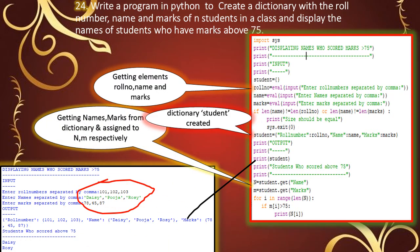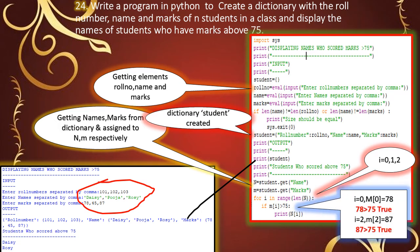Next, we compare the marks with 75 in a for loop using range(len(n)). Since n has three elements, the loop runs from 0 to 2. If m[0] (which is 78) is greater than 75, we print n[0], which displays Daisy. Next, i equals 1, so m[1] is 45.